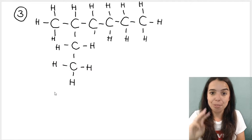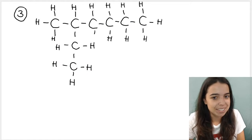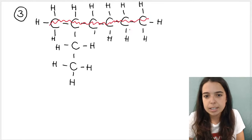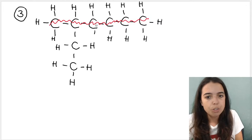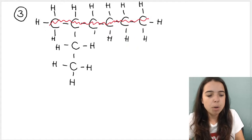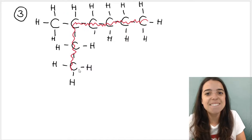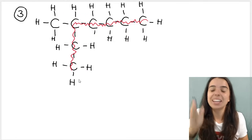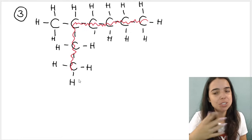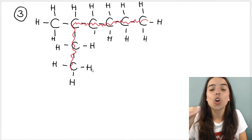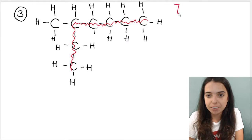Example three — you need to be careful. If I count one, two, three, four, five, six — is that the longest chain? But look carefully: one, two, three, four, five, six, seven. That one might catch you — it's bending, but it's still continuous. As long as it's a continuous chain, we're fine. The chain with seven carbons is the longest continuous carbon chain, so we know that seven is hept — this is going to be heptane.